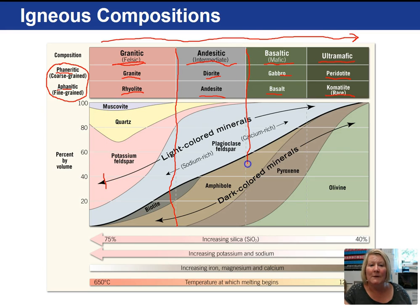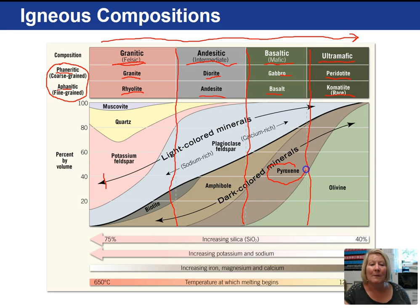Andesites are dominated by plagioclase feldspar, quartz almost disappears, and there is an increase in ferromagnesian minerals like amphibole. With our basaltic composition, we still have a lot of plagioclase feldspar, and now pyroxene is a common mineral while amphibole is disappearing. Finally, in our ultramafic composition, it is overwhelmingly dominated by olivine, with maybe a little pyroxene and plagioclase feldspar.